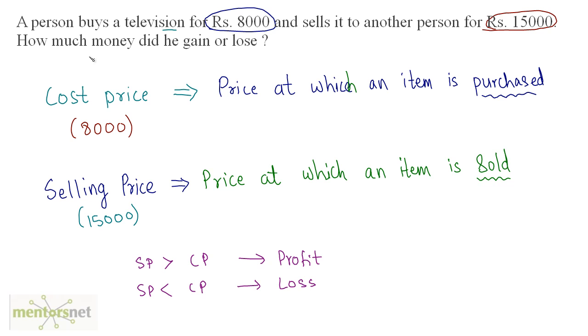Let us calculate how much money did he gain. Just subtract selling price from the cost price to get the profit. Profit equals 15000 minus the cost price 8000. So 15000 minus 8000 equals 7000 rupees. He made a profit of 7000 rupees.